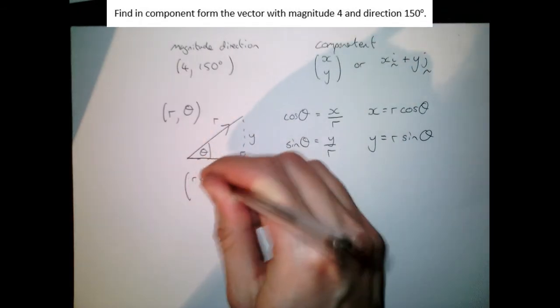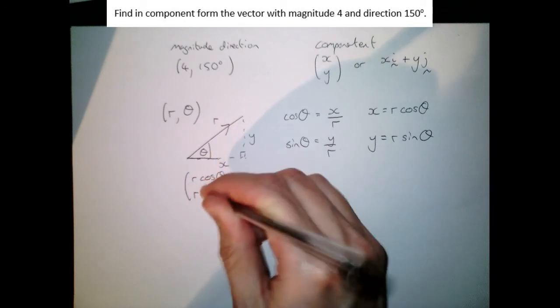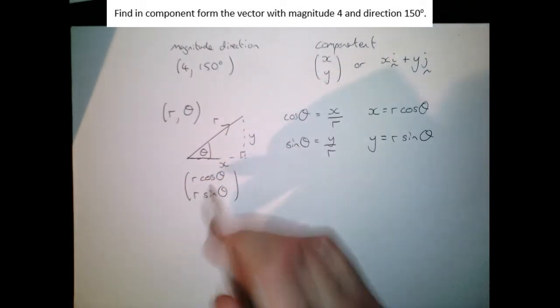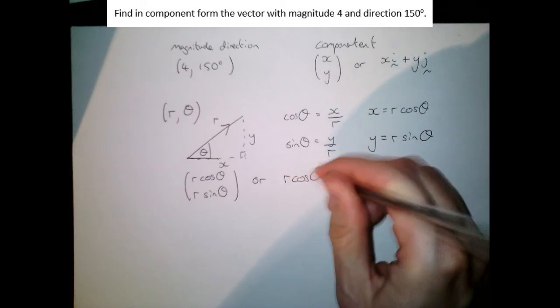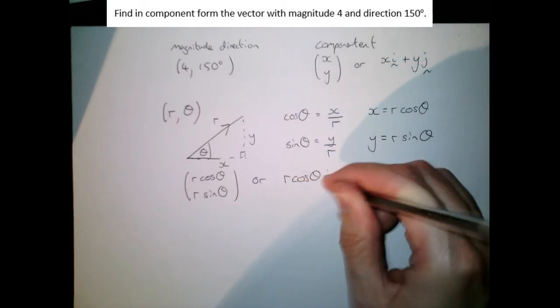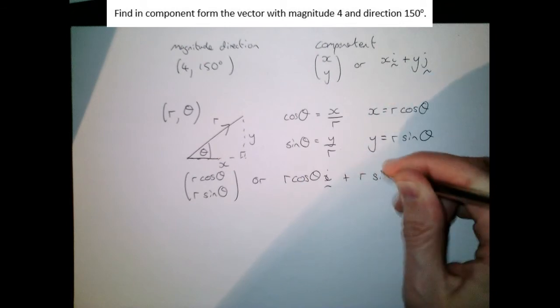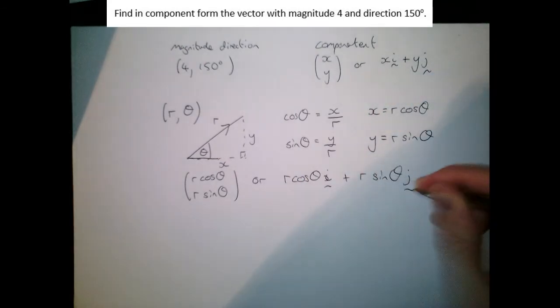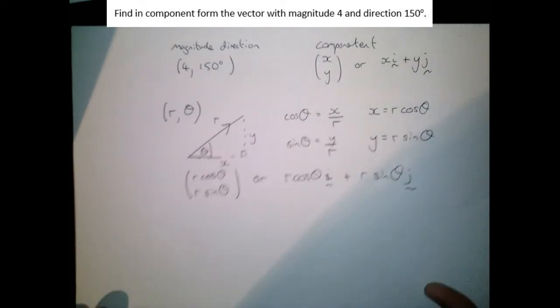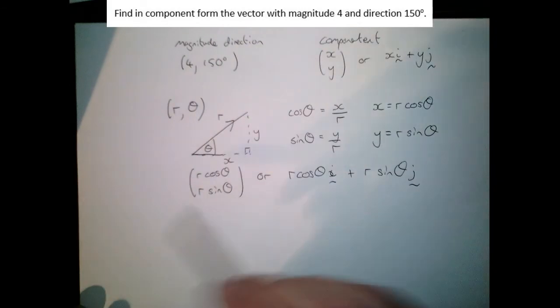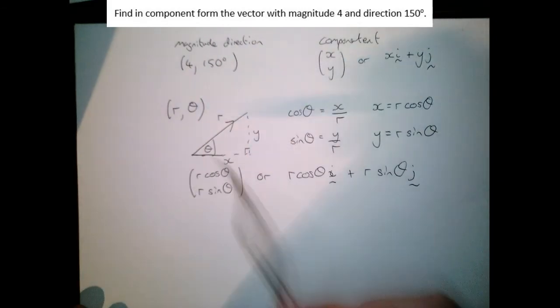X is r cos theta, y is r sine theta. Or equally we could write this as being r cos theta i plus r sine theta j. Again those who've done further maths will recognize the cos plus i sine kind of format appearing. So there we go, that's magnitude-direction into component form.